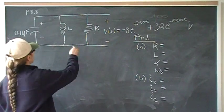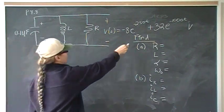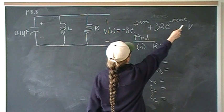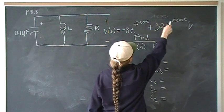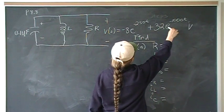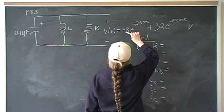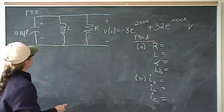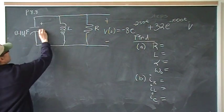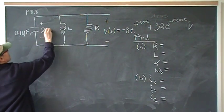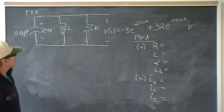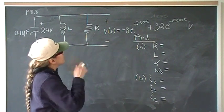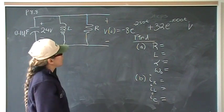The initial voltage is 24. If you set time to zero, the exponentials go away — E to the zero power is one — so 32 minus 8 is 24. We have the initial voltage, and we also have the general voltage equation.